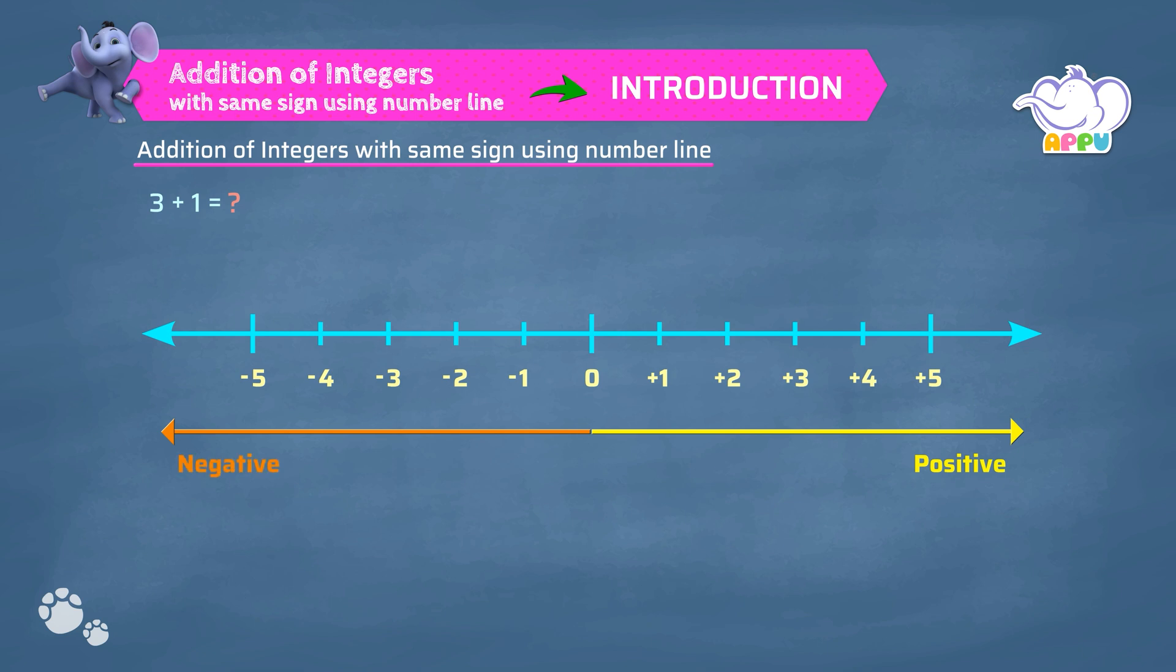With reference to 0, we move 3 to the right to get plus 3. We are adding 1 to 3. So we move 1 unit to the right from plus 3. We get plus 4, which is the answer.